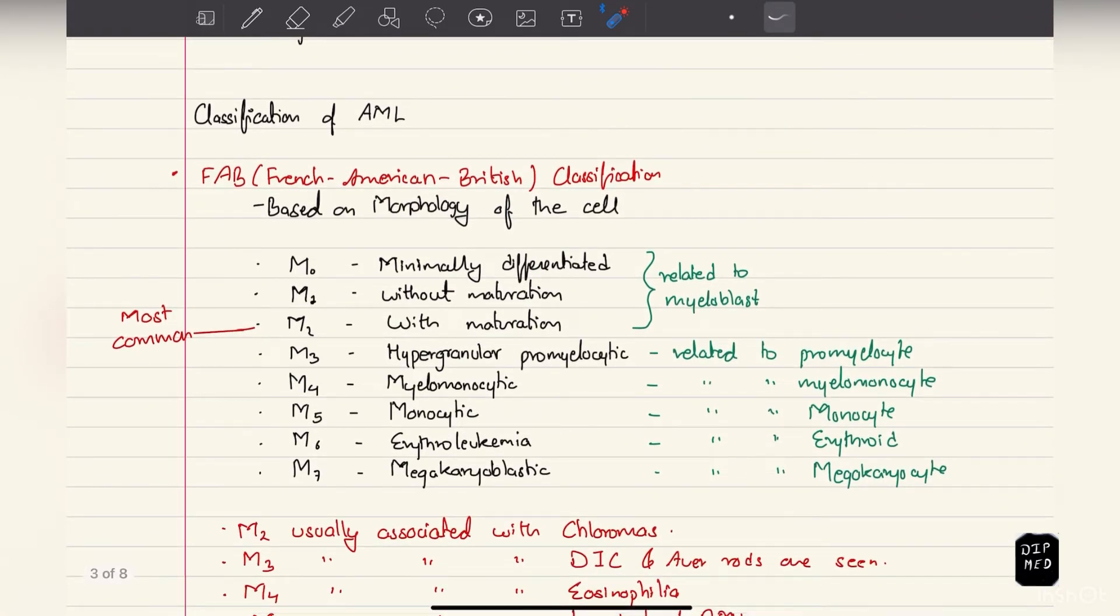Now coming on to the classification of acute myeloid leukemia: under French American British classification, which is based on morphology of the cell, AML is divided from M0 to M7.